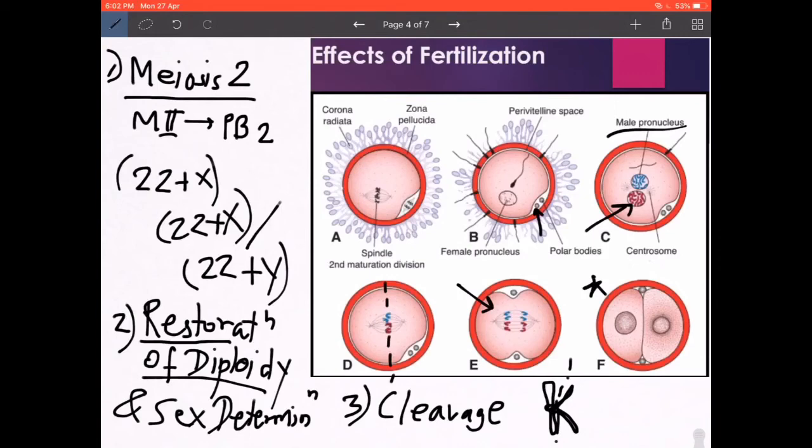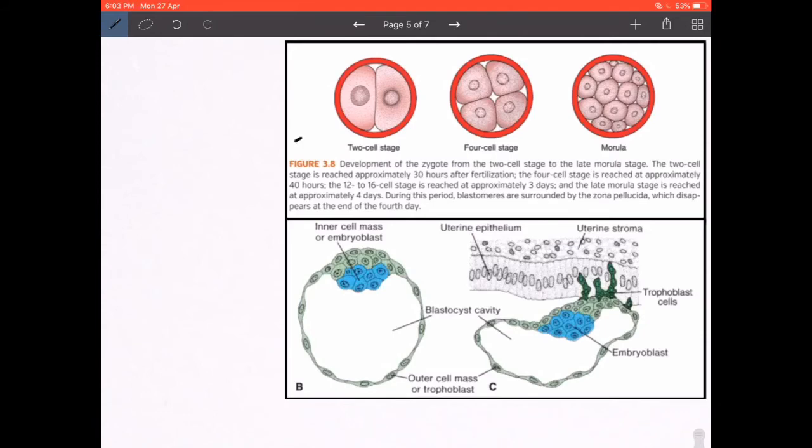This is the first division of cleavage. In fertilization, there can never actually be a one-cell stage. There is the union of male and female pronuclei and then an immediate mitosis that leads to a two-cell stage. These mitotic divisions are known as cleavage divisions. The only difference between typical mitosis and cleavage is that as cleavage divisions keep occurring, every cell becomes smaller and smaller. The two-cell stage happens approximately 30 hours after fertilization. Then there is a four-cell stage at approximately 40 hours.